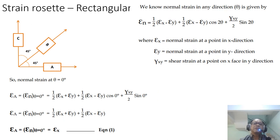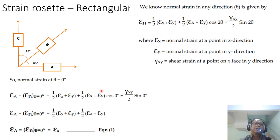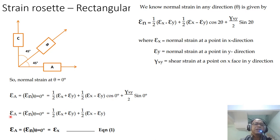Let's start with the rectangular strain rosette. You have strain in the A direction, B direction, and C direction. The strain at any angle is given by the transformation equation. When you substitute theta equals 0 degrees: sin 2θ = sin 0 = 0, so the gamma xy term vanishes; cos 0 = 1. Therefore epsilon at 0 degrees equals epsilon x. So epsilon x is equivalent to epsilon A.